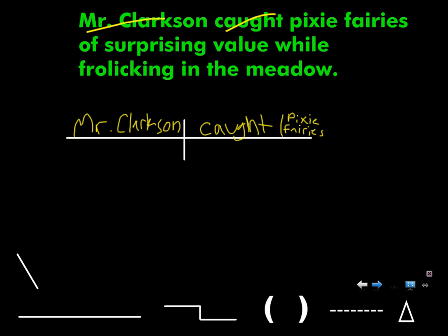Ethan, what is 'pixie fairies' here? He's placed a straight horizontal line next to 'caught.' What is 'pixie fairies'? What grammar structure is it? Taylor, help him out. It's a direct object. Why, Taylor? Because it's a straight line. True, that's one answer, but also look at 'caught' — what type of verb is 'caught'? Action verb.